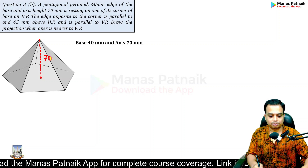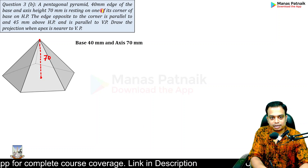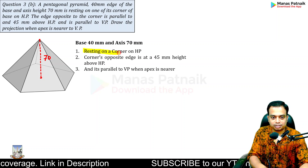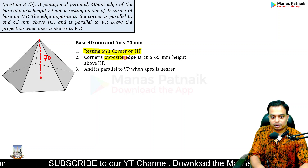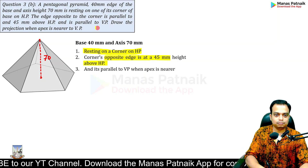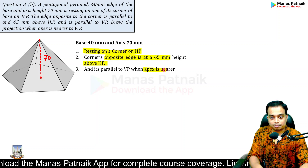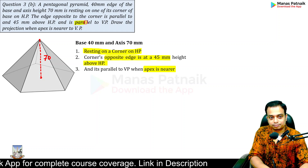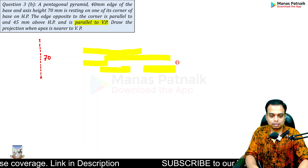There are plenty of conditions. First: resting on one corner of the base on HP. Second: the edge opposite to this corner is at a height of 45mm and parallel to HP. Third: draw the projection when the apex is nearer to the VP. Also remember this edge is parallel to VP. These two points concern the edge, and this point concerns the corner.